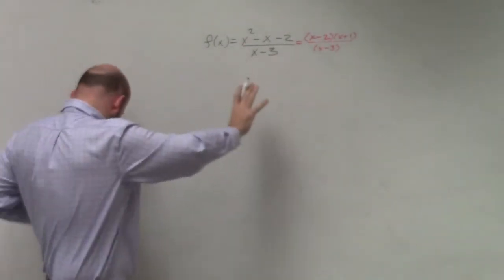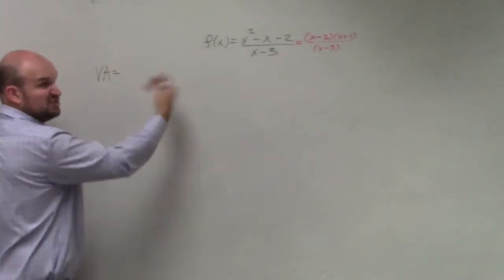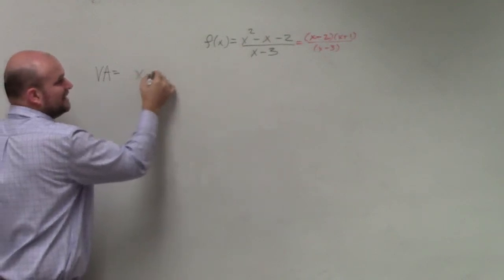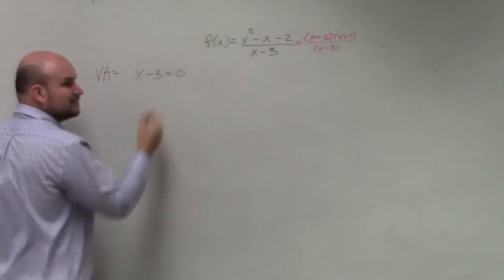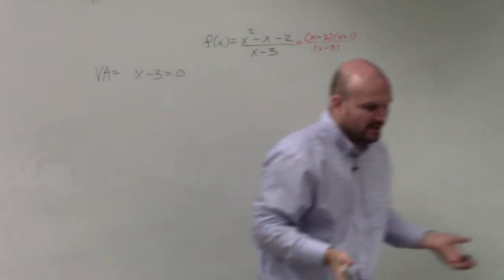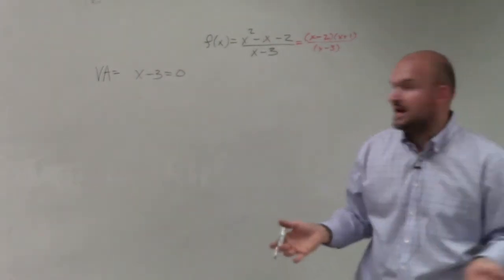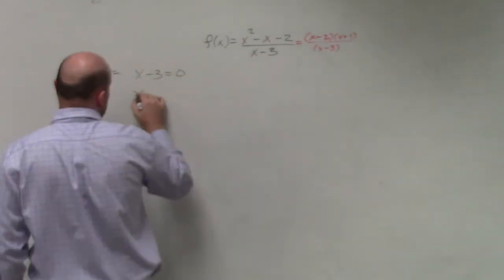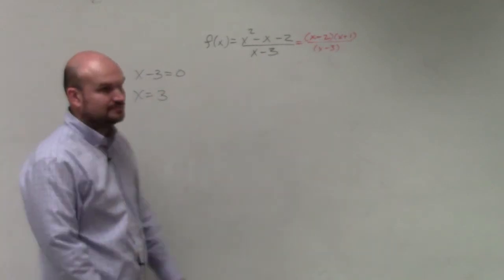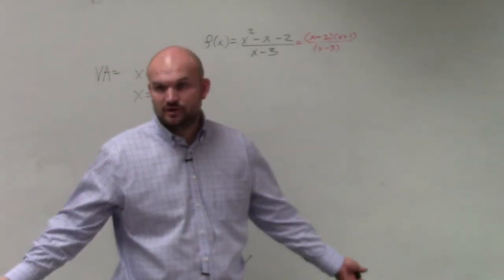However, we factor it out, nothing else can be simplified. So all we need to do, just like we did for the domain, is set your denominator equal to 0. Where your asymptotes are, those are the values not in your domain. So set it and solve: x equals 3. Done, vertical asymptote.